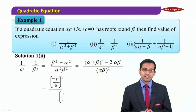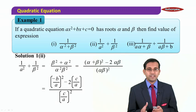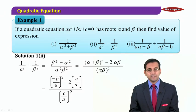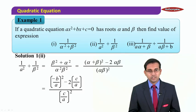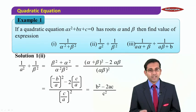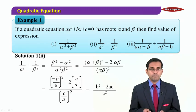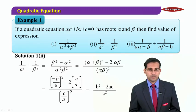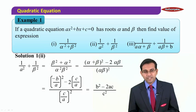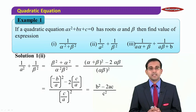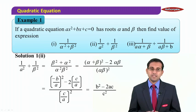Using α+β = −b/a and αβ = c/a, we substitute into the expression to get the simplified result: (b² − 2ac)/c². That is the value of the second symmetric expression in terms of a, b, and c.